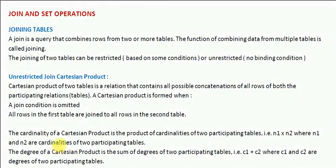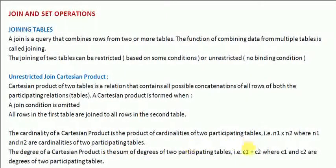So, the cardinality of the Cartesian product will be the product of the number of rows of both tables, and the degree of the Cartesian product will be the sum of the columns of both the participating tables. In this way we can find the Cartesian product of two tables.